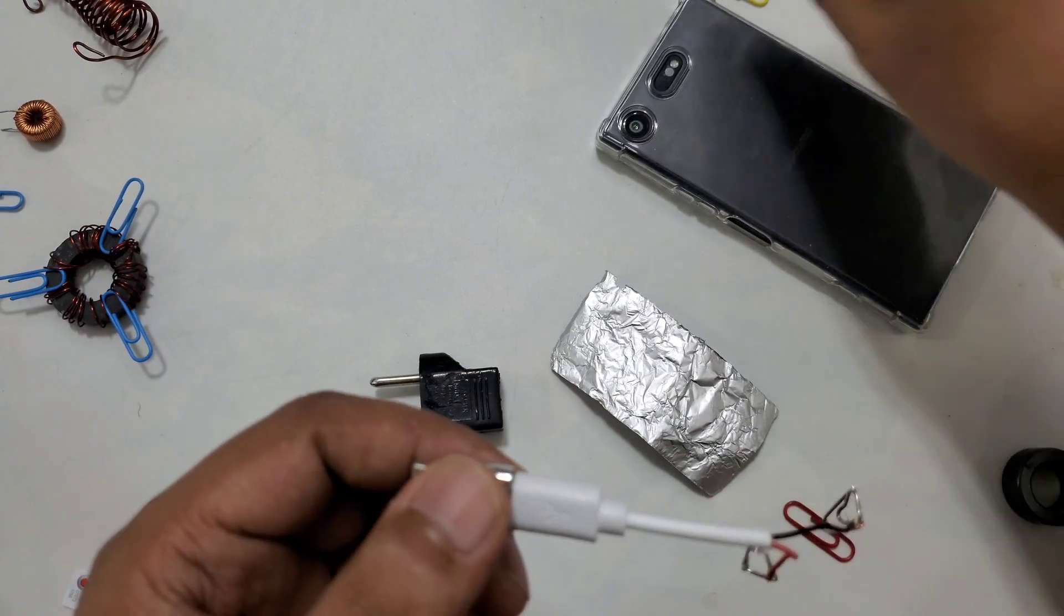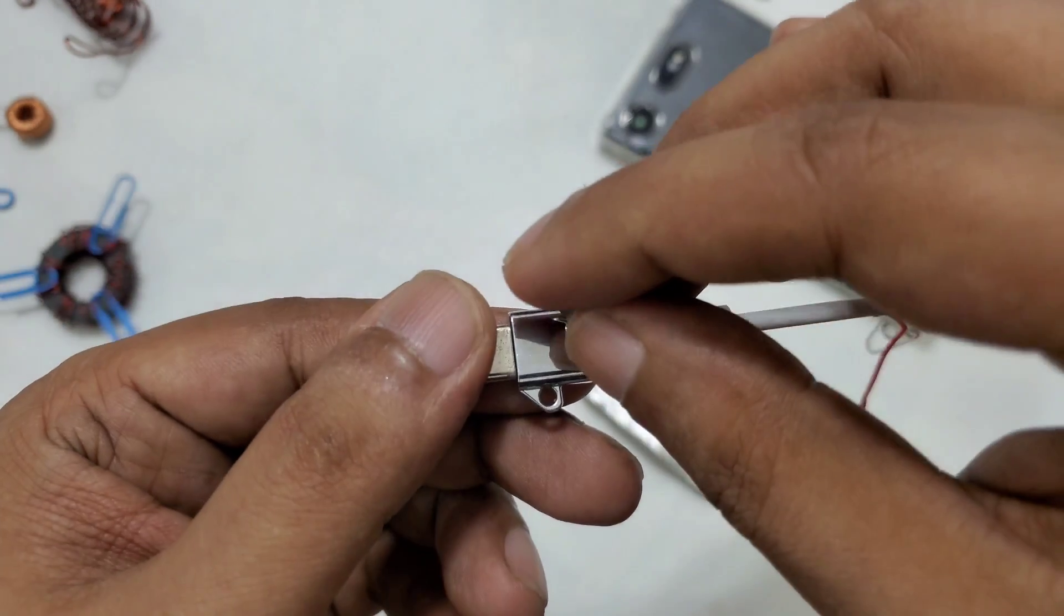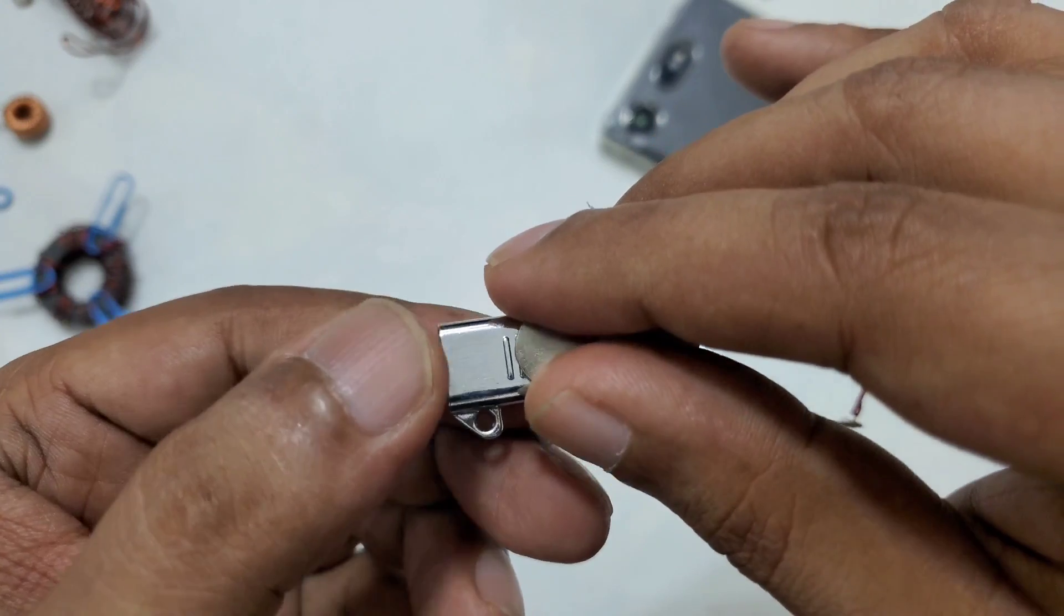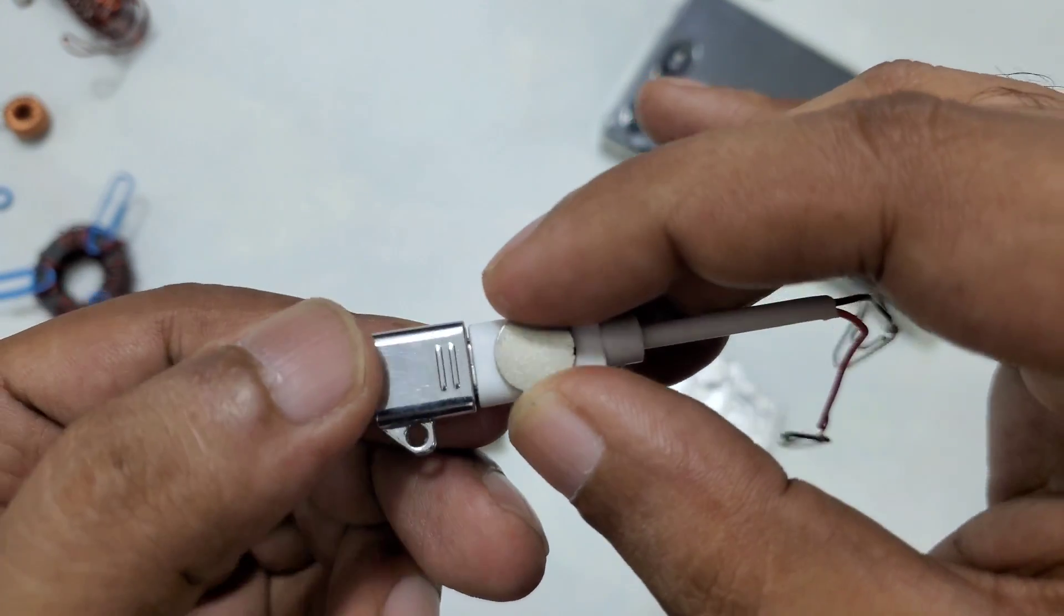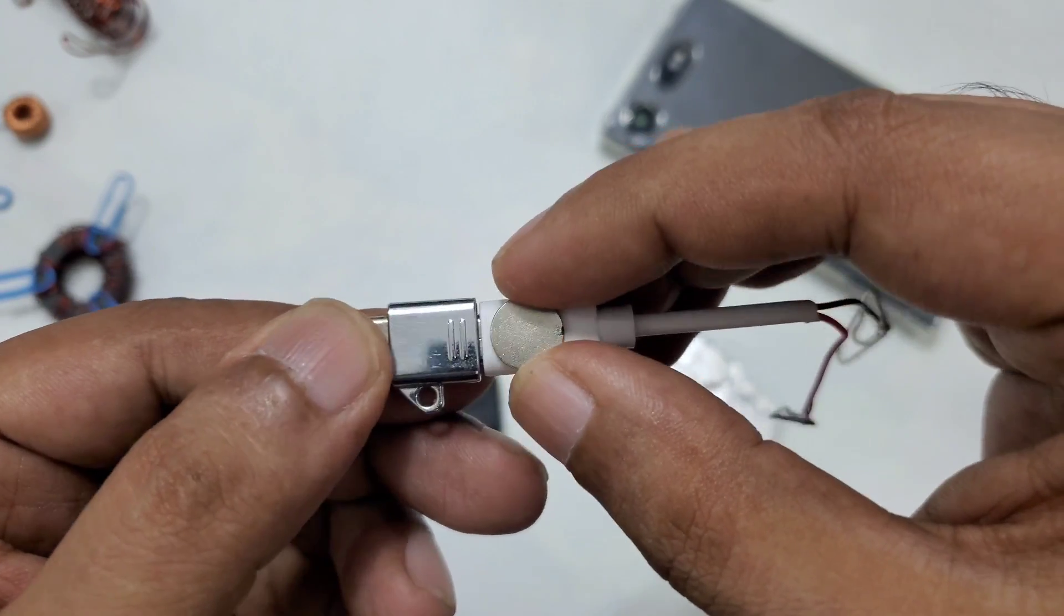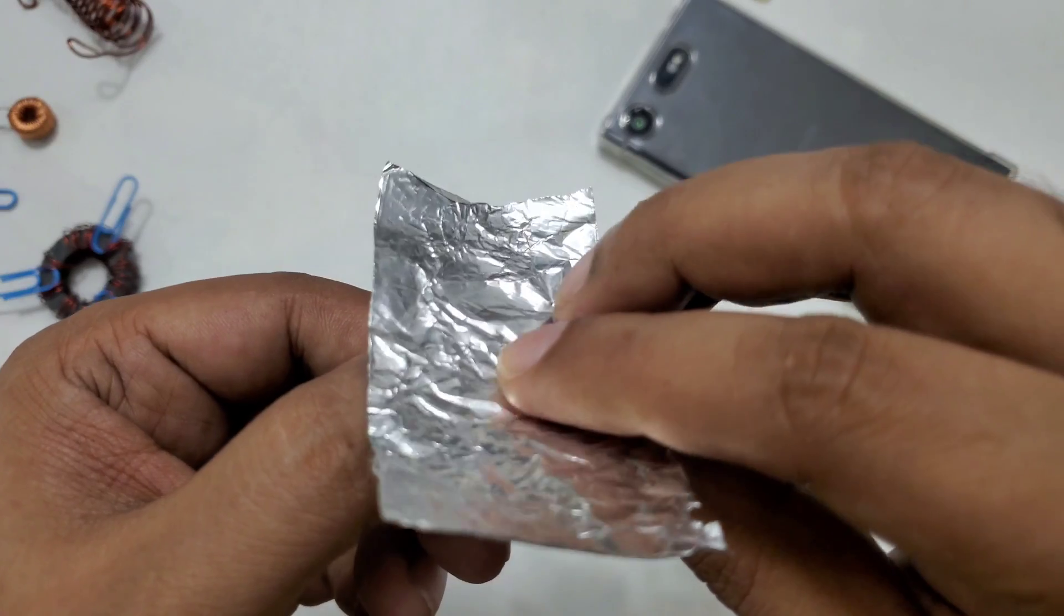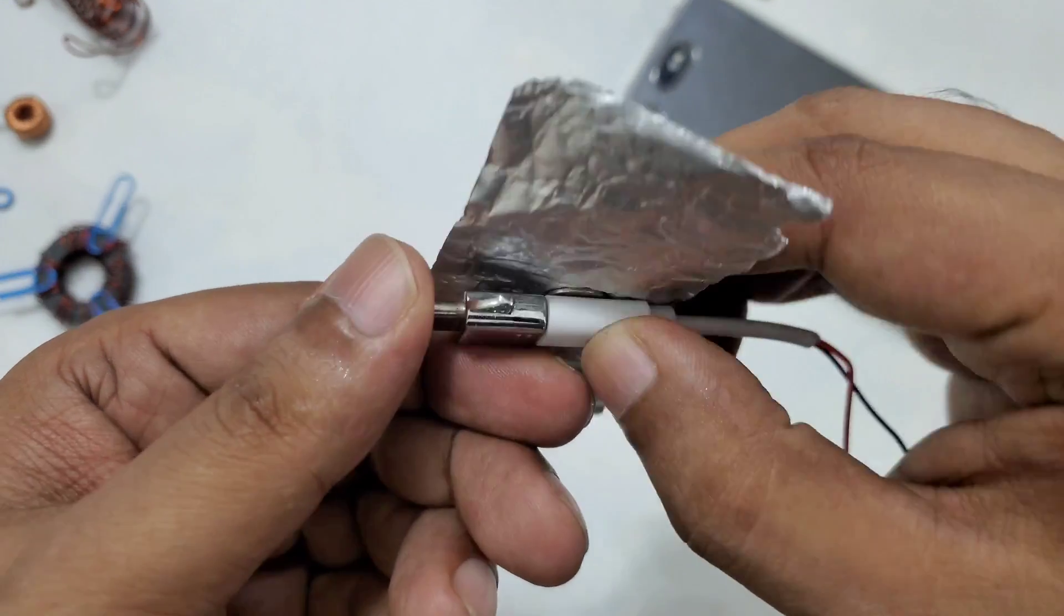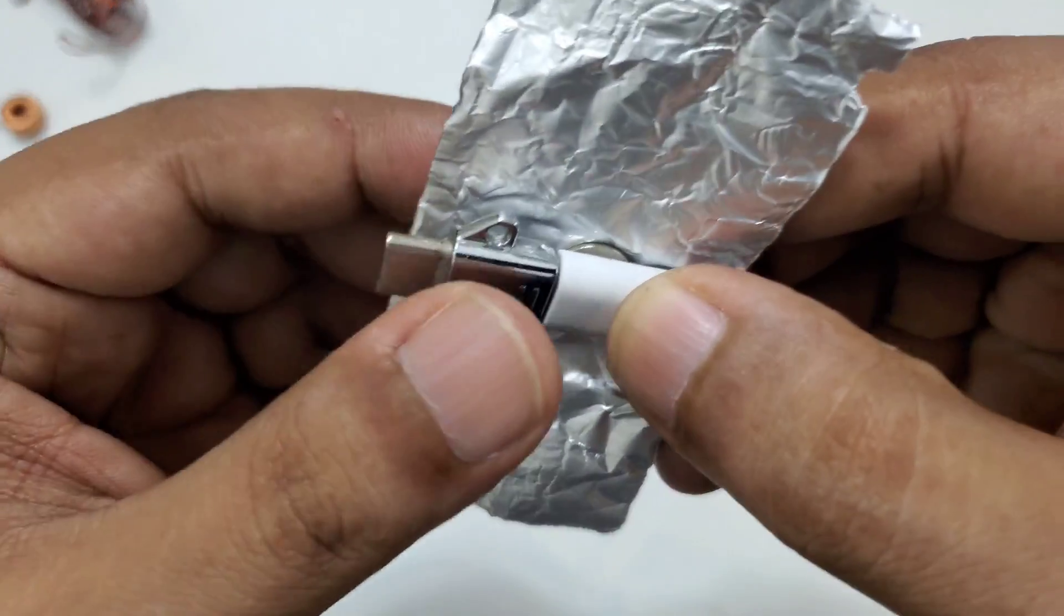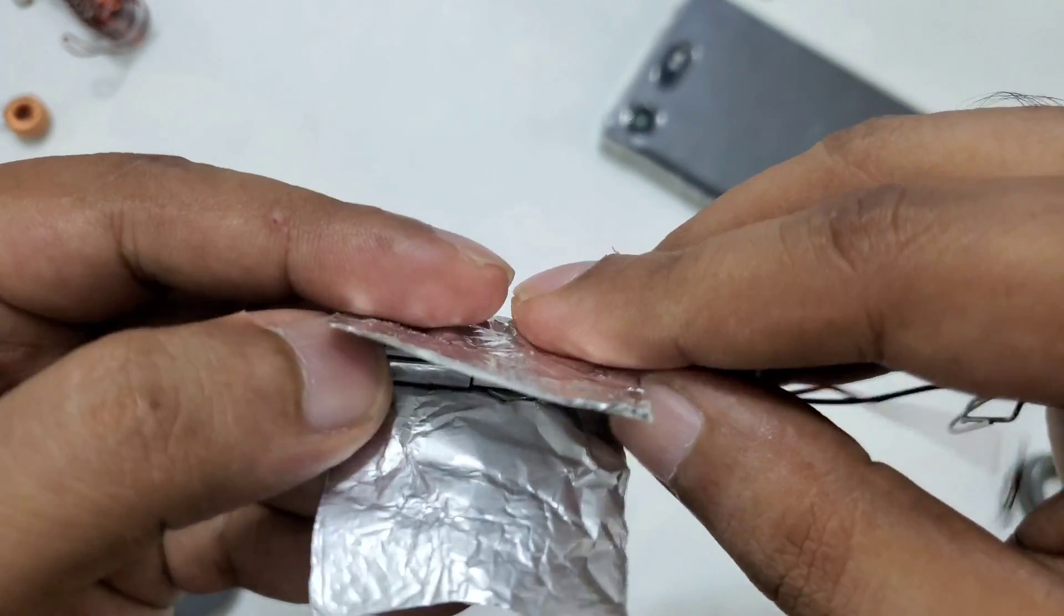What we're going to do, we just need one millimeter thin small magnet and place it on top between the connector. You can put it in this one or in this one, it doesn't matter much. Just place it and wrap your aluminum foil. Simple.